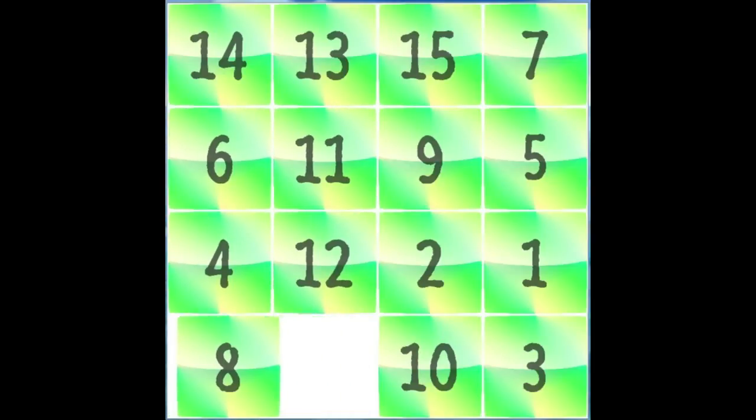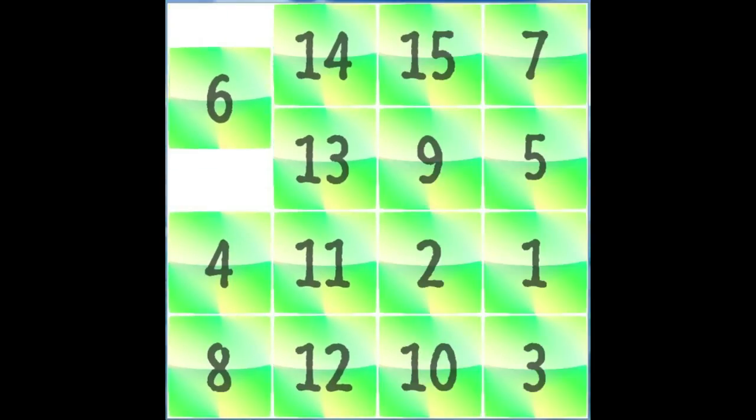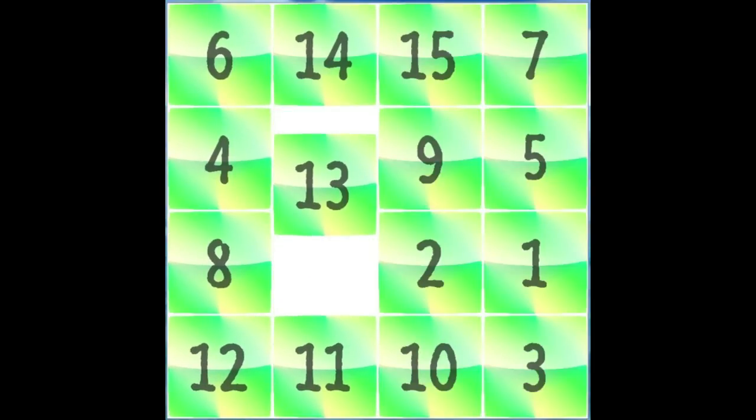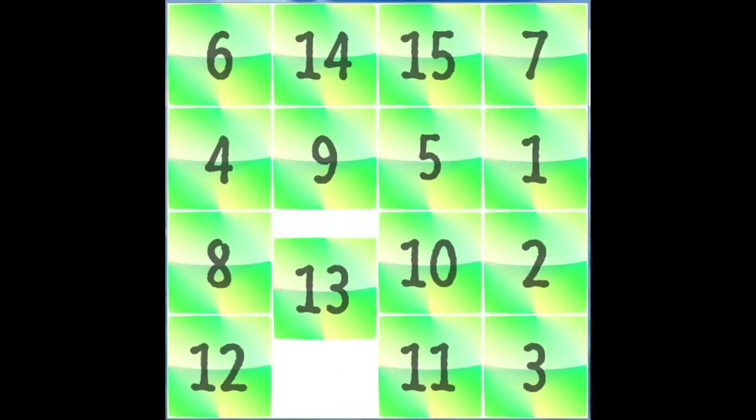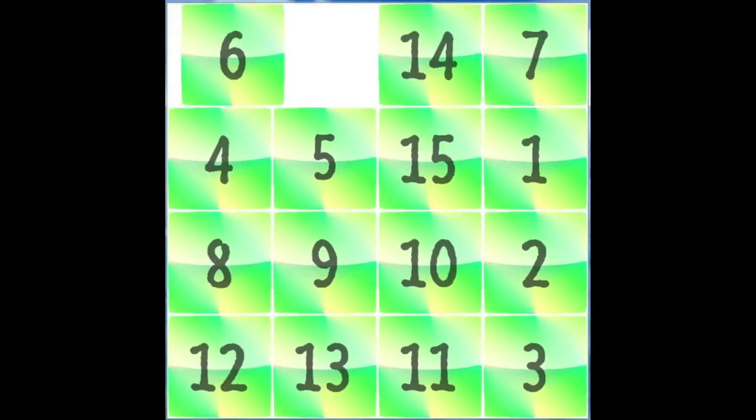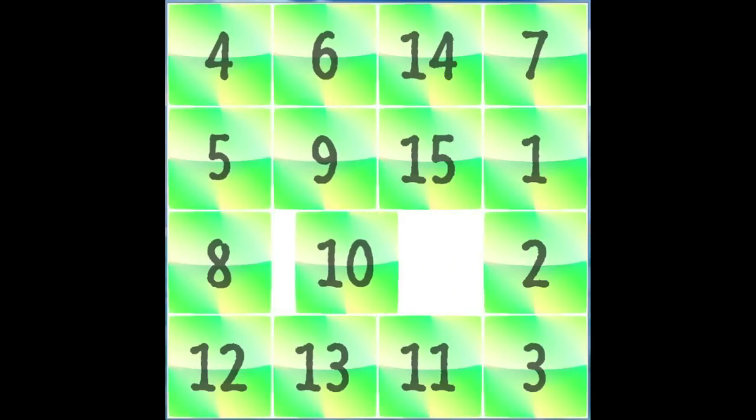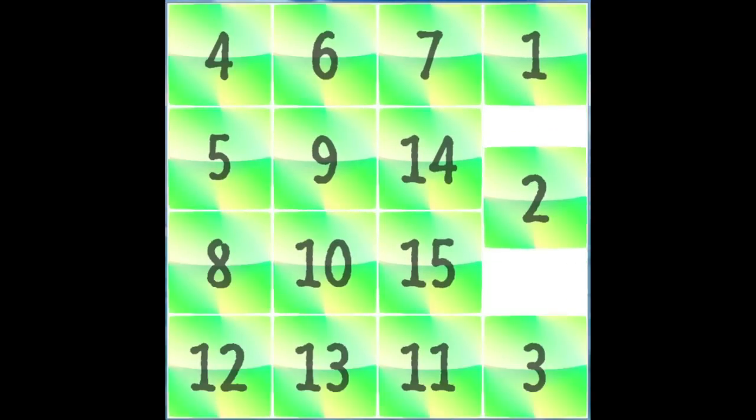What you're seeing right now is an algorithm that I've written working on solving a specific instance of the 15 puzzle. What it's doing is it's looking at possible choices of slides that it can make. Before it finishes, it'll have to explore over 127 million different choices.